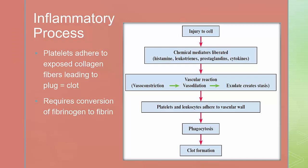The inflammatory process and clot formation. This is a flowchart of the inflammatory response sequence. In the third phase, platelets and leukocytes adhere to vascular walls. In the fifth phase, we have phagocytosis, and eventually clot formation. The platelets adhere to the exposed collagen fibers, leading to the formation of a clot or a plug. Clots obstruct lymphatic fluid drainage and localize the injury response. These are required for the conversion of fibrinogen to fibrin.